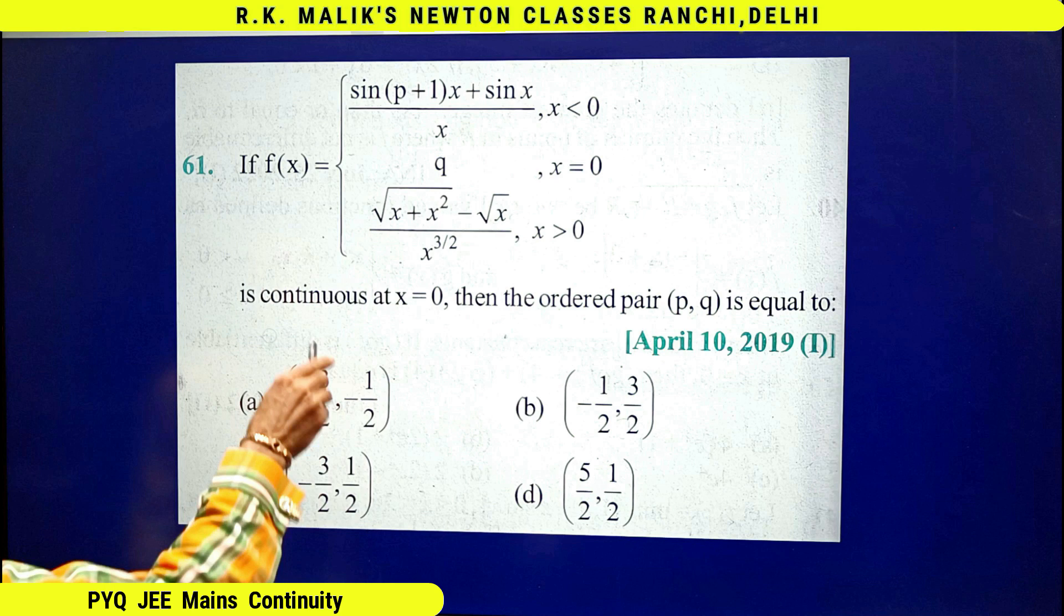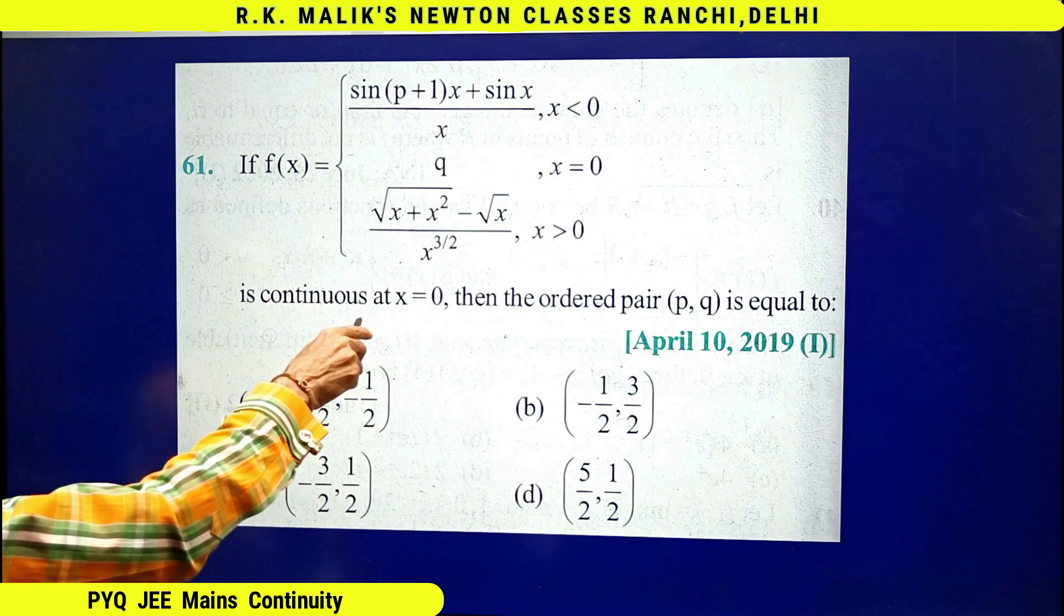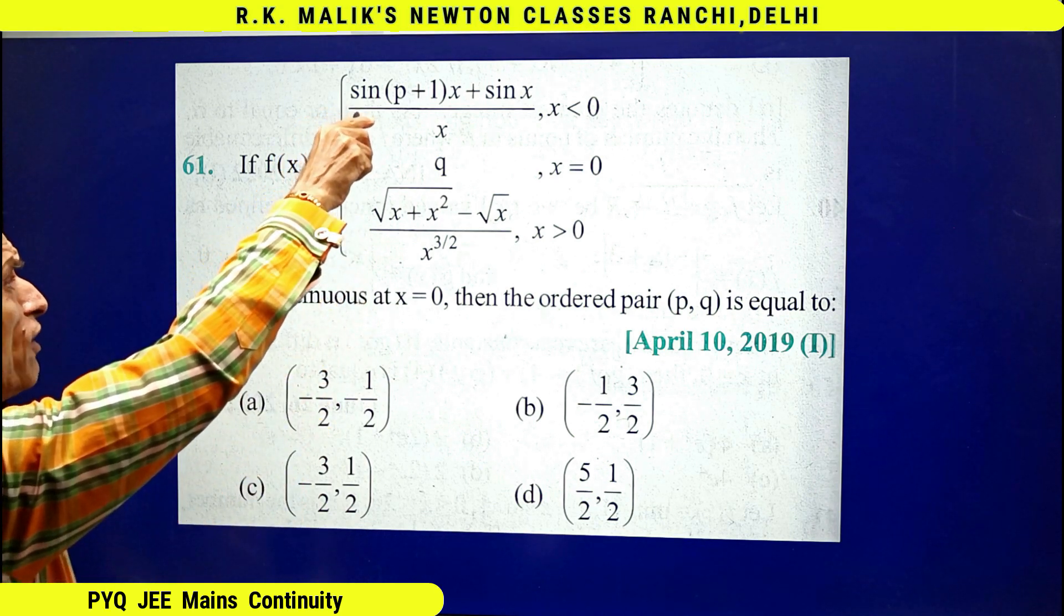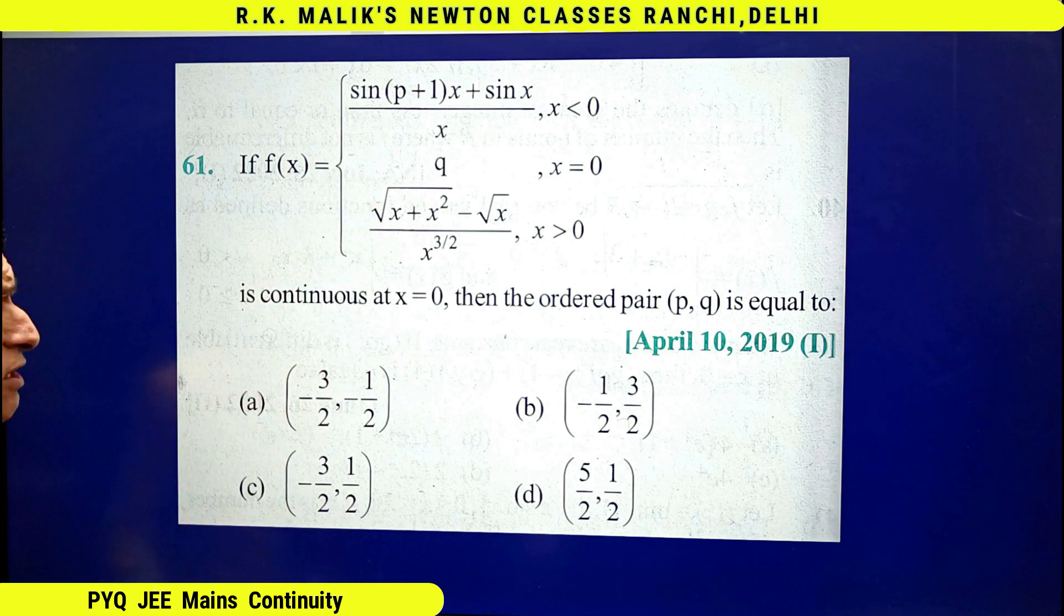In this question, for continuity at x = 0, I will equate the value of left hand limit, the value of the function, and the right hand limit, and I will get relations between p and q. From those relations I will get the value of p and q.